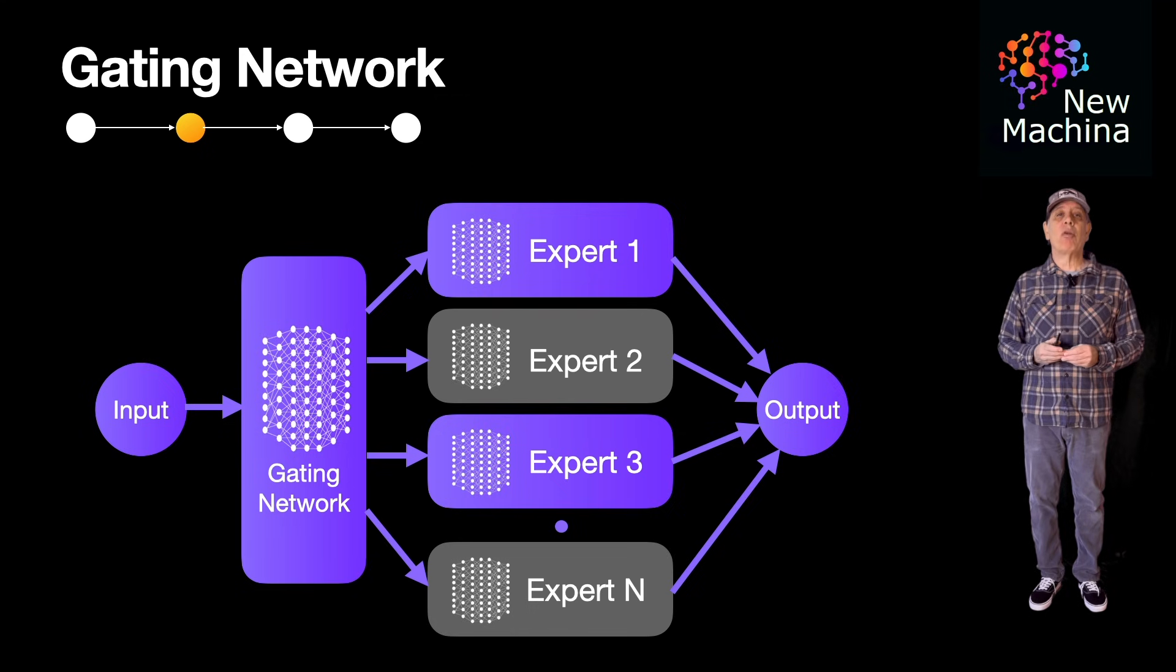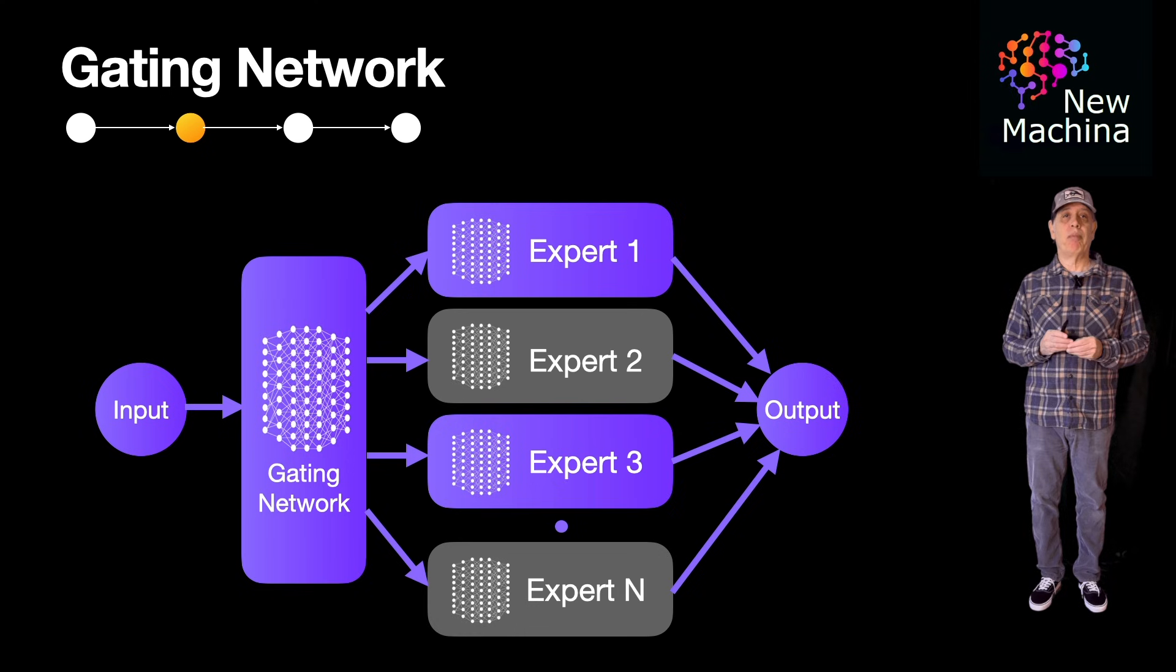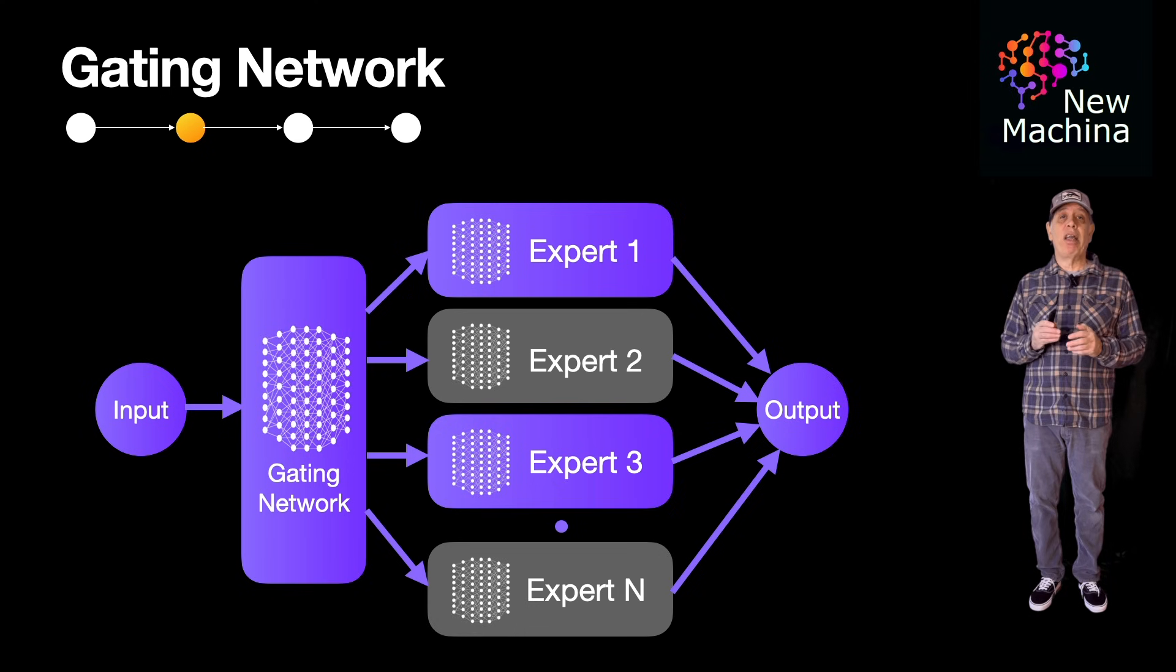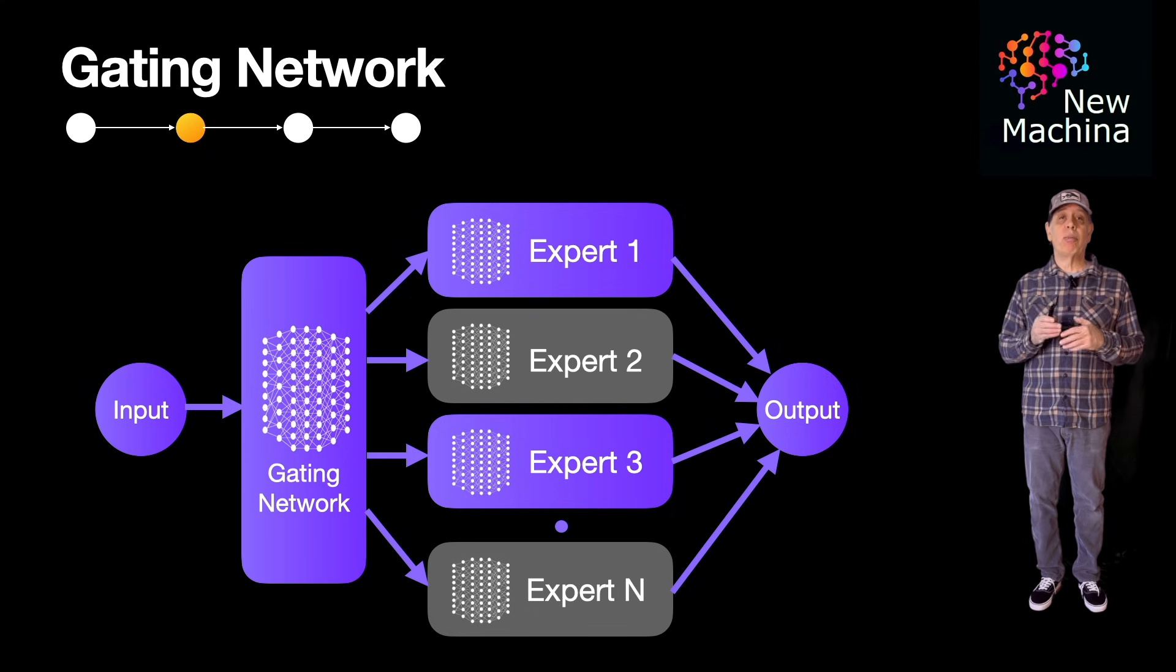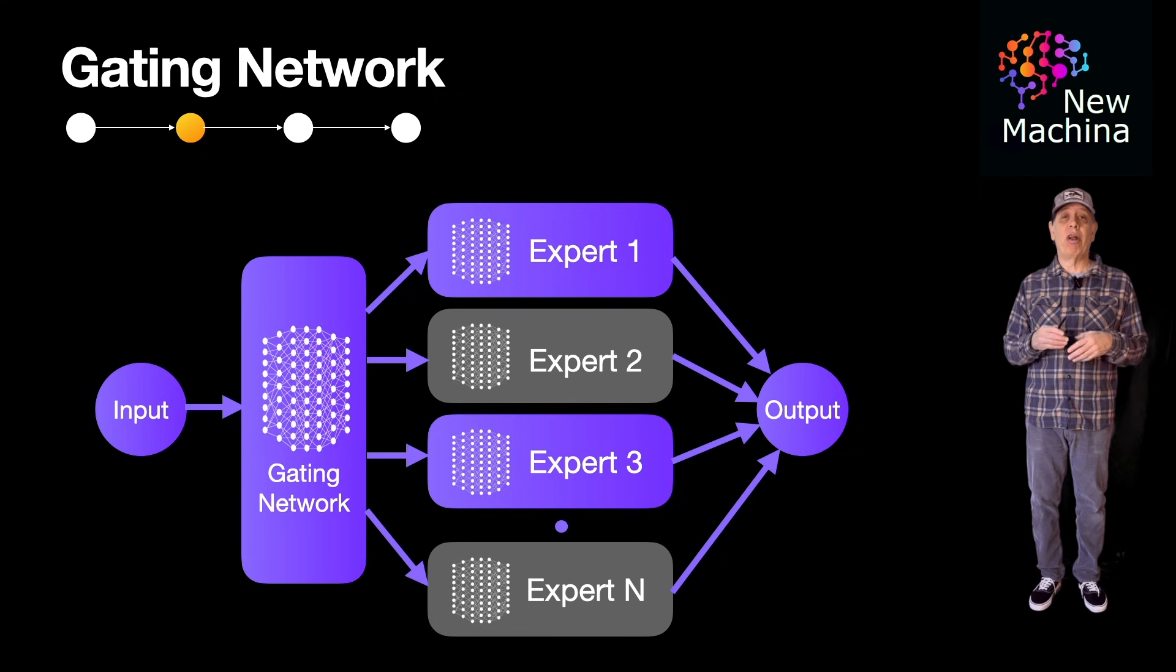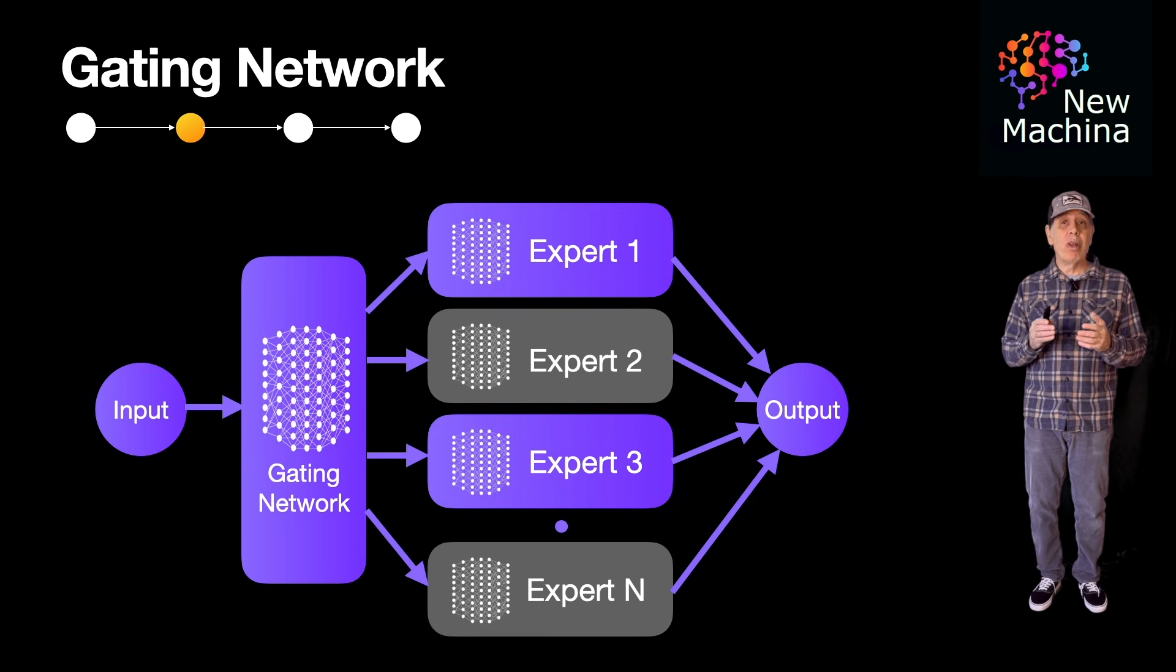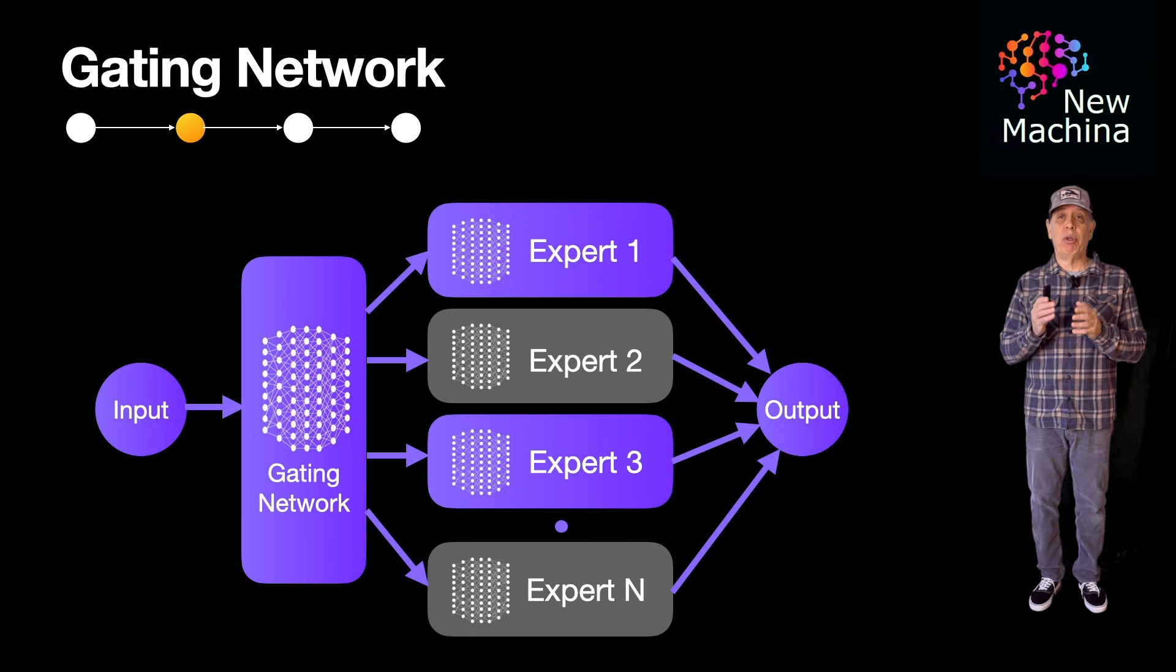Why are MoE models characterized by sparsity? By activating only a small number of experts, out of the total maximum number of experts, the architecture reduces computational cost while maintaining high model capacity. This sparsity allows scaling to very large models without a linear increase in compute resources.